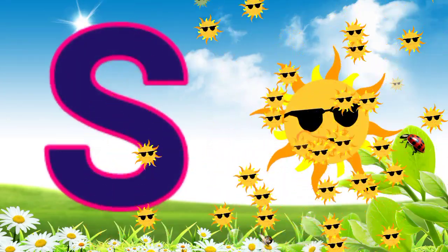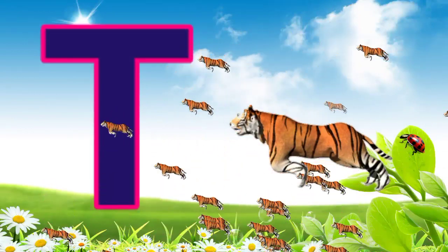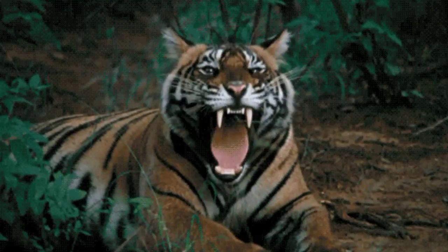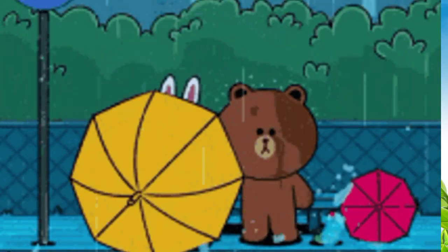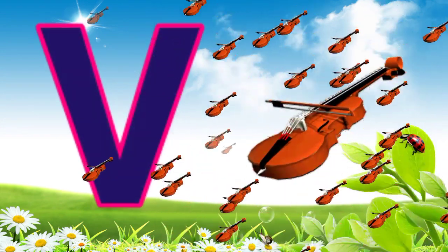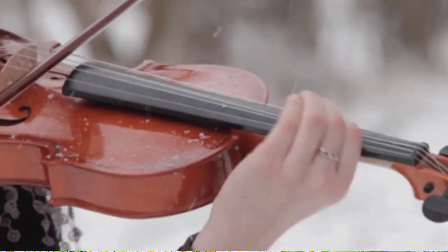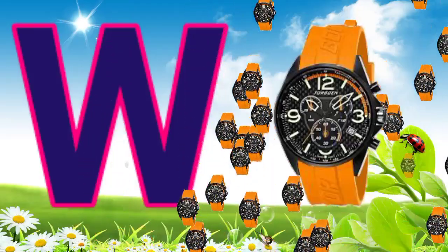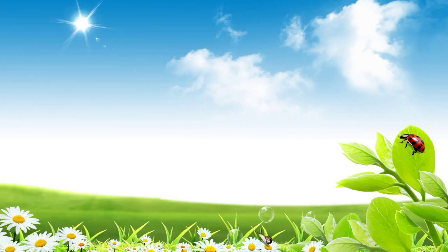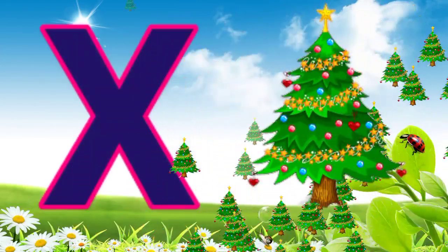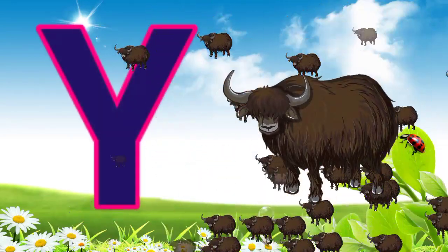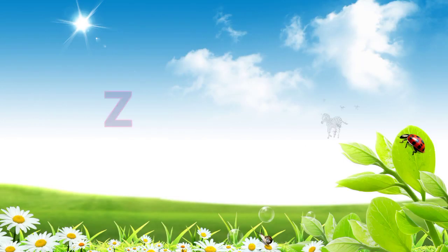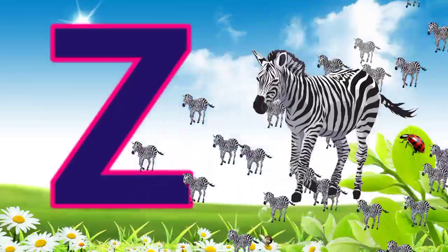S. S for sun. T. T for tiger. U. U for umbrella. V. V for violin. W. W for watch. X. X for Christmas tree. Y. Y for yak. Z. Z for zebra.